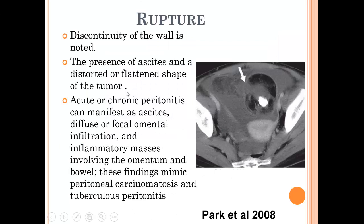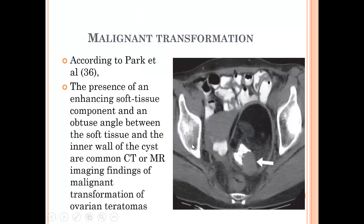In another case of rupture, signs include: discontinuity of the wall, presence of ascites, distorted or flattened shape of the tumor, acute or chronic peritonitis, widespread fatty globules, focal or omental infiltration, and inflammatory masses in the omentum and bowel that may mimic peritoneal carcinomatosis or tuberculous peritonitis.